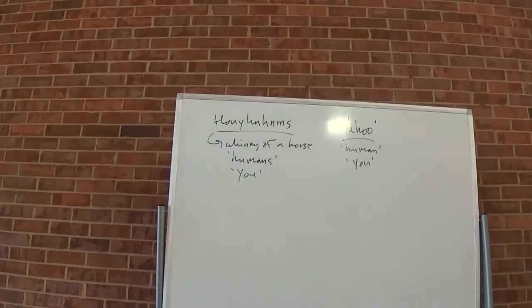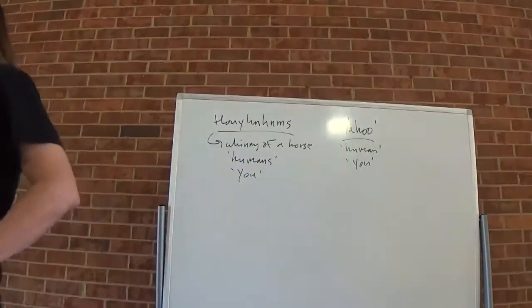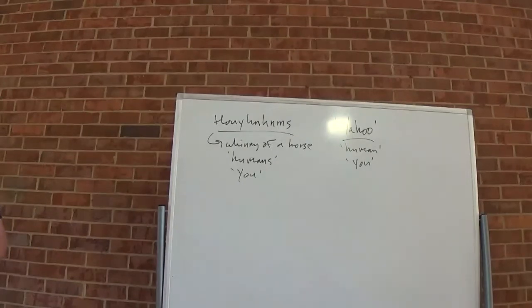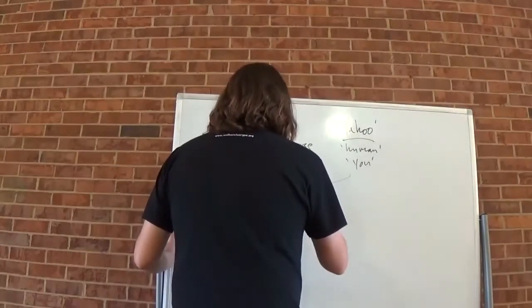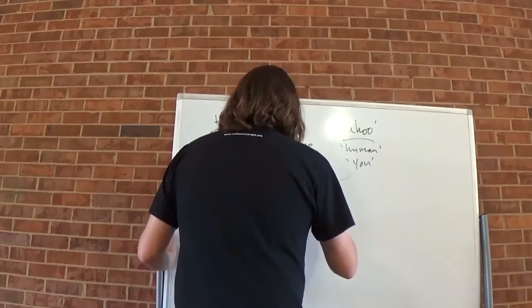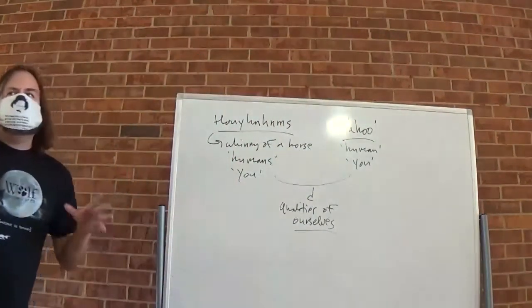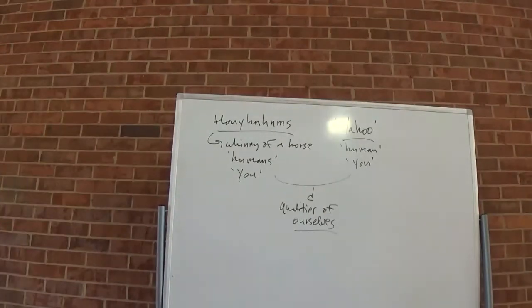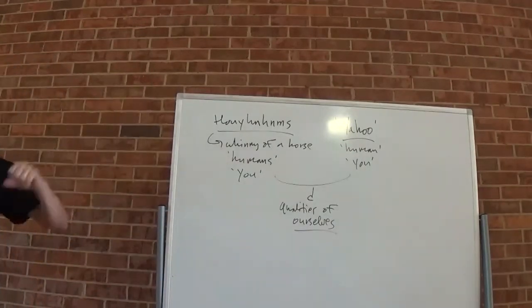Now, Yahoo is also intended to sound a little bit like human and a little bit like you. So what's the implication if both of these are meant to sound like human and you? Yeah, because they're like qualities. That we're supposed to recognize qualities of ourselves in both of these species. So there's some connection to humanity here. There's supposed to be some recognition of self here in both of these species.